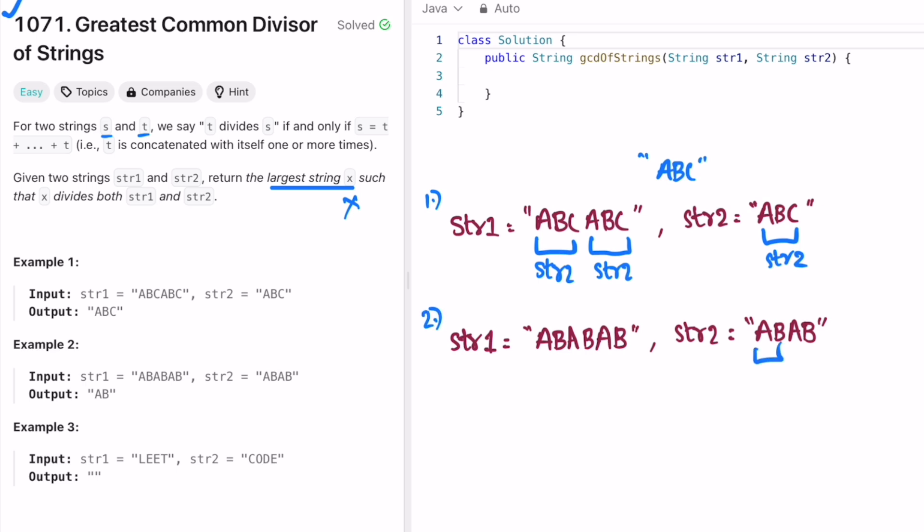And in the second example you can see this is the greatest common divisor AB and this is also formed by three ABs. So how are you able to solve these three examples? And here you can see there is no common between both so you return an empty string as the output.